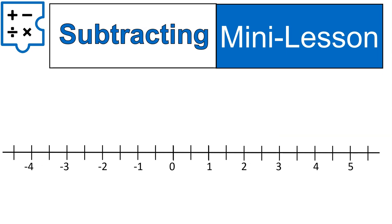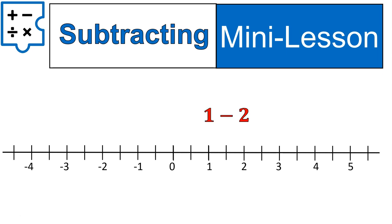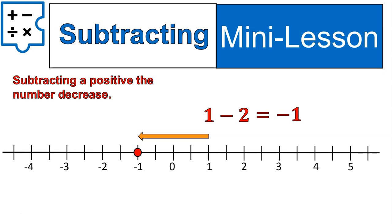Now let's talk about subtracting. Subtracting is the opposite of adding. In other words, if I have one minus two, that means I'm starting at one and I am moving to the left two spaces, which would bring us to negative one. So subtracting a positive two — taking away a positive — means that I am decreasing the value. So one minus two is equal to negative one. Subtracting a positive means the number decreases.